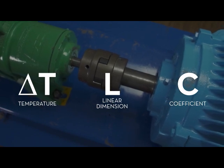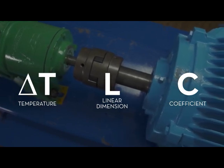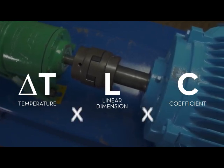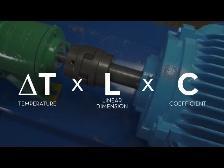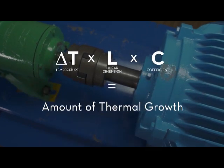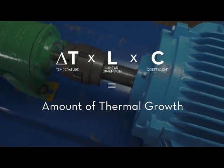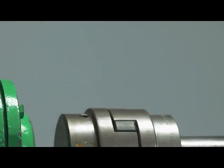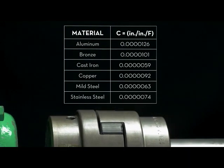These three elements are multiplied in the following equation: delta T times L times C. This is equal to the amount of thermal growth in the machine. In order to find the coefficient of linear thermal expansion for common types of machine metals, refer to the following chart.